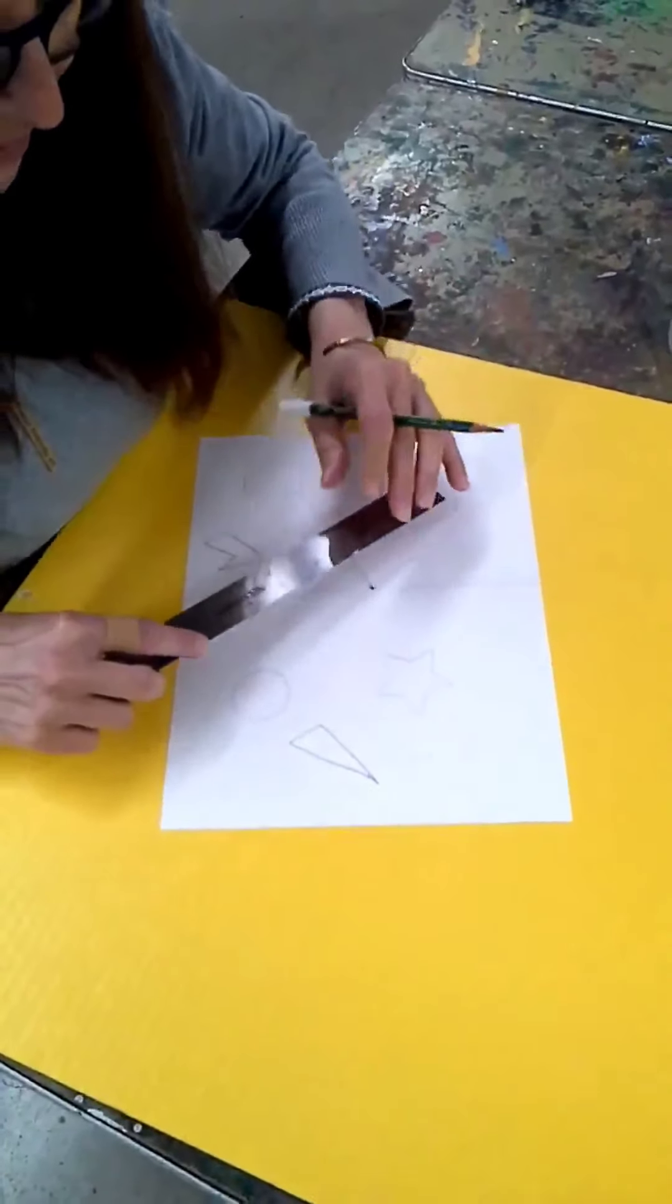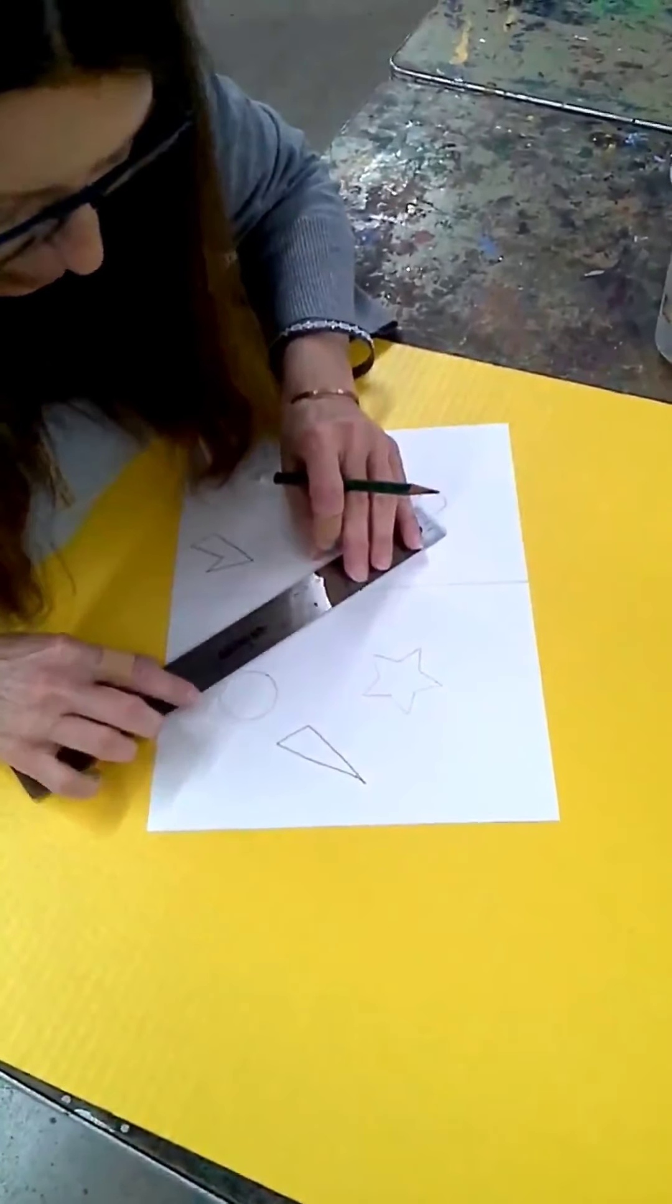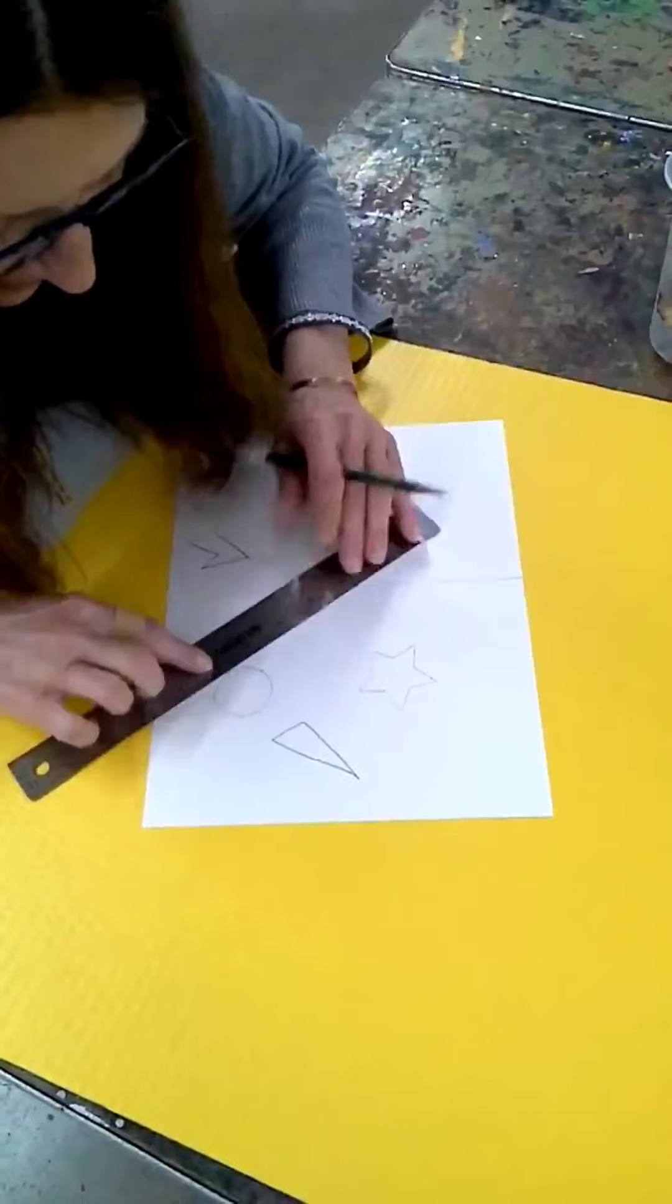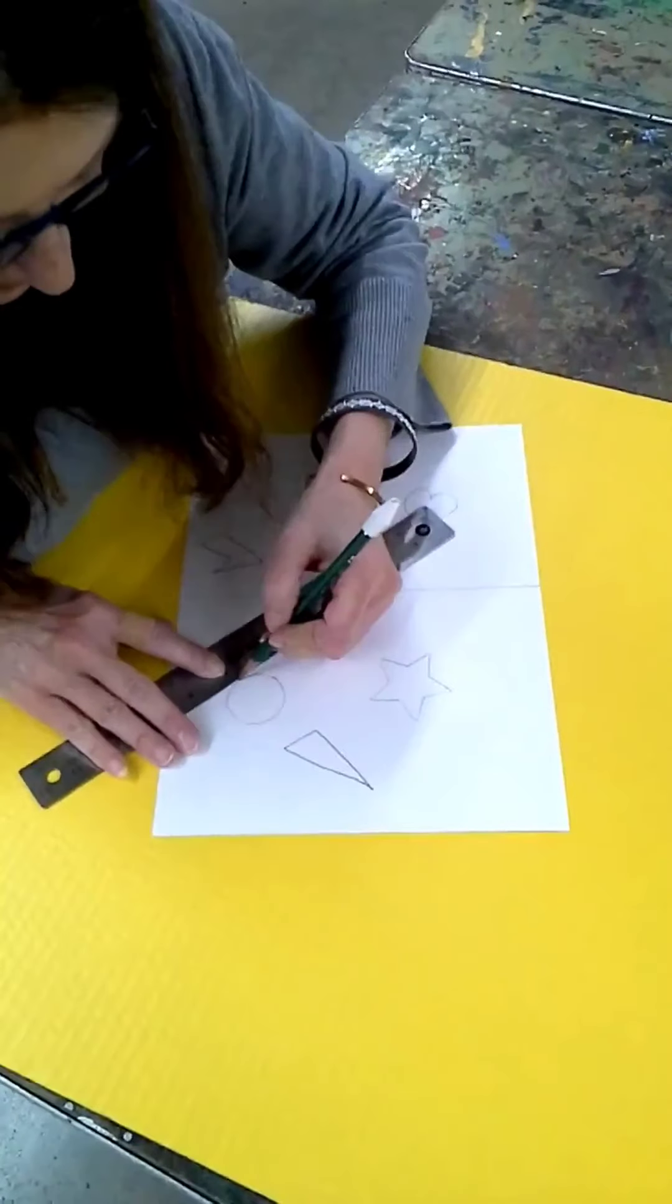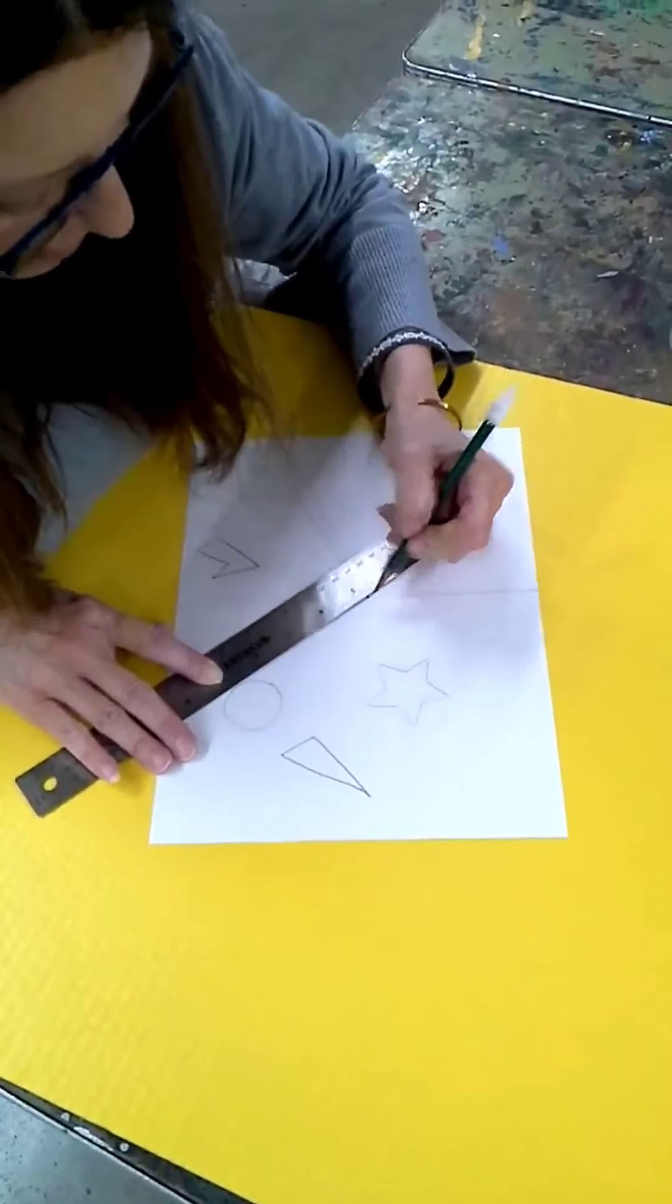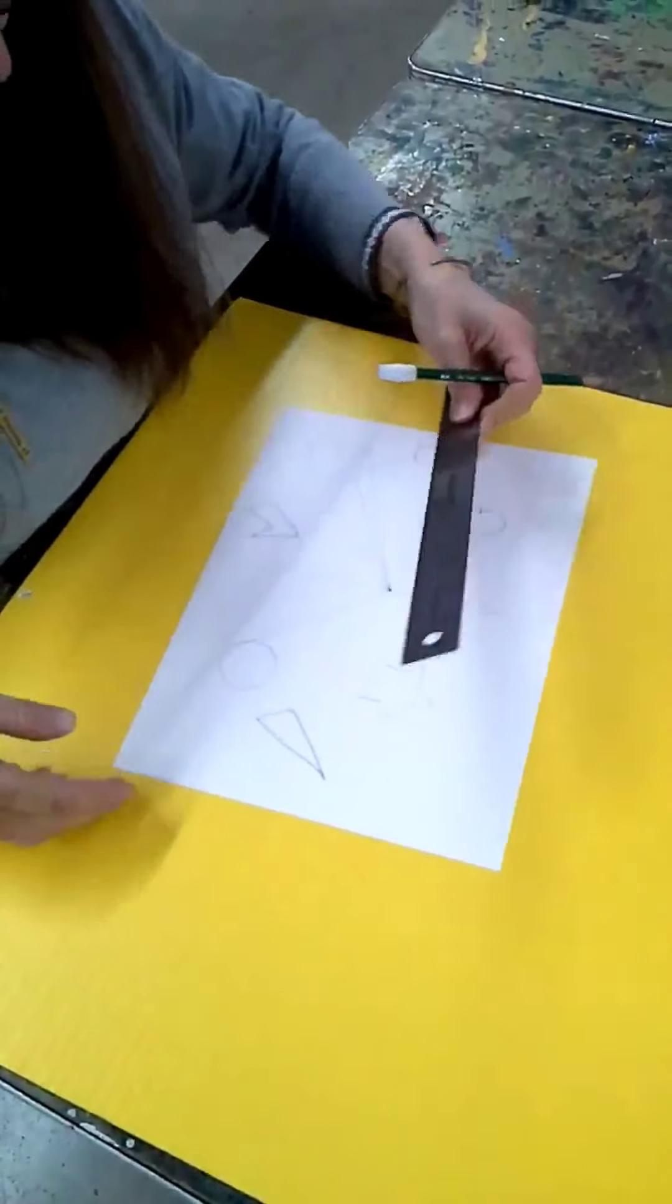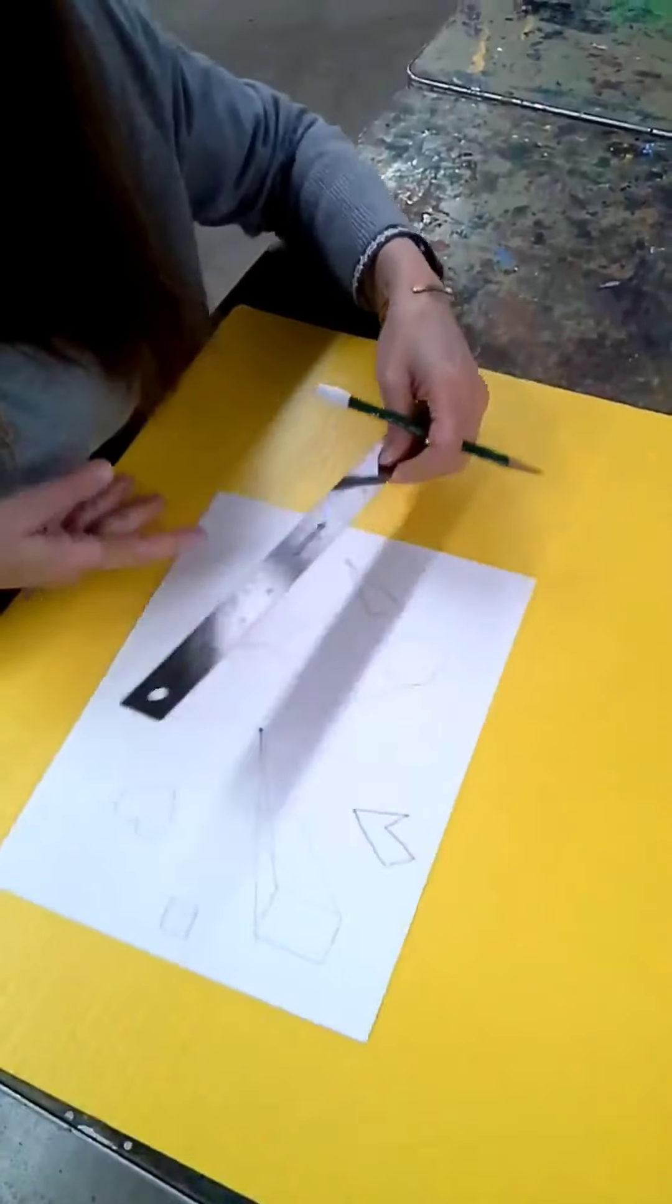Circles and hearts are a little different, so what you're going to do, you're going to line that up to the side here and draw your line.